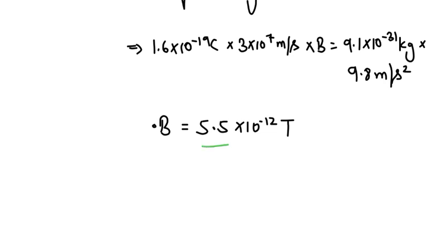Therefore the magnetic field is 5.5 into 10 raised to the power minus 12 tesla. The direction of the magnetic field must be perpendicular to the velocity of the electron and in the opposite direction of the gravitational force. This means that the magnetic field must point downward. I hope this answered your question, thank you.